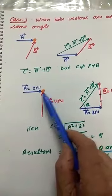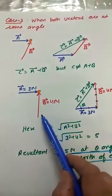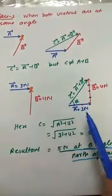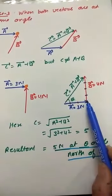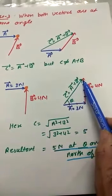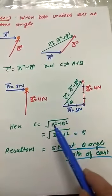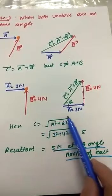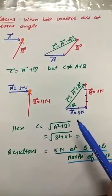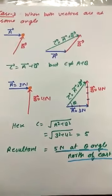Next case: both vectors are at 90 degrees. If one force pushes the body east and the other pushes north, we draw the first vector, then from its head draw the second vector perpendicular to it, and the resultant goes from tail of the first to head of the last. In this case, C equals the square root of A squared plus B squared — giving 5 Newton. In the next video we will derive this formula for the addition of vectors.